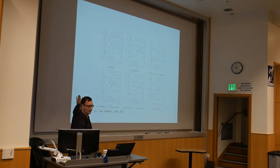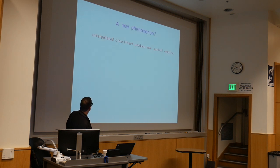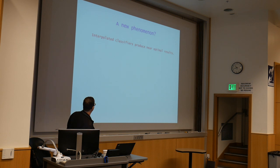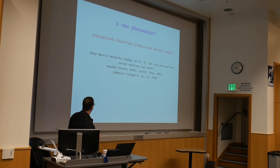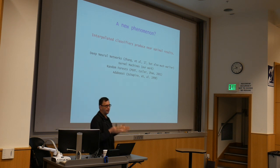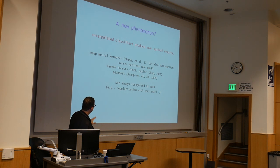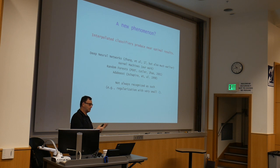Is this a new phenomenon? It turns out that it's not exactly new. In deep neural networks it has been observed recently, but also much earlier — as long ago as 20 years ago. We observed it for kernel machines, but it's been observed for kernel machines before. Random forests, similar things, Adaboost — there are all sorts of methods known to perform very well on test when your training loss is zero. Regularization with very small lambda is effectively interpolation, though not necessarily registered as such.